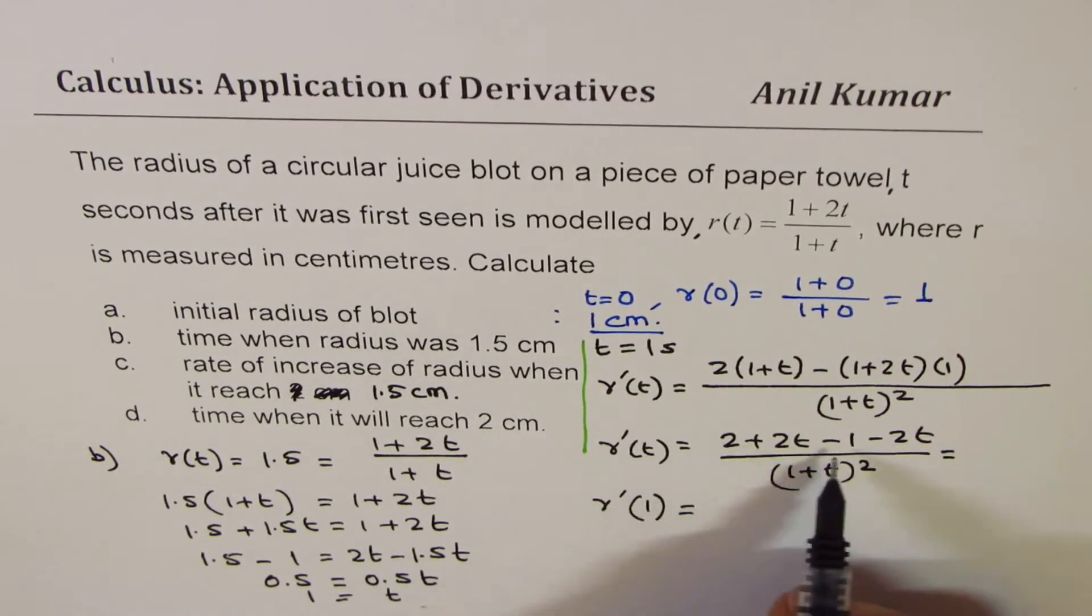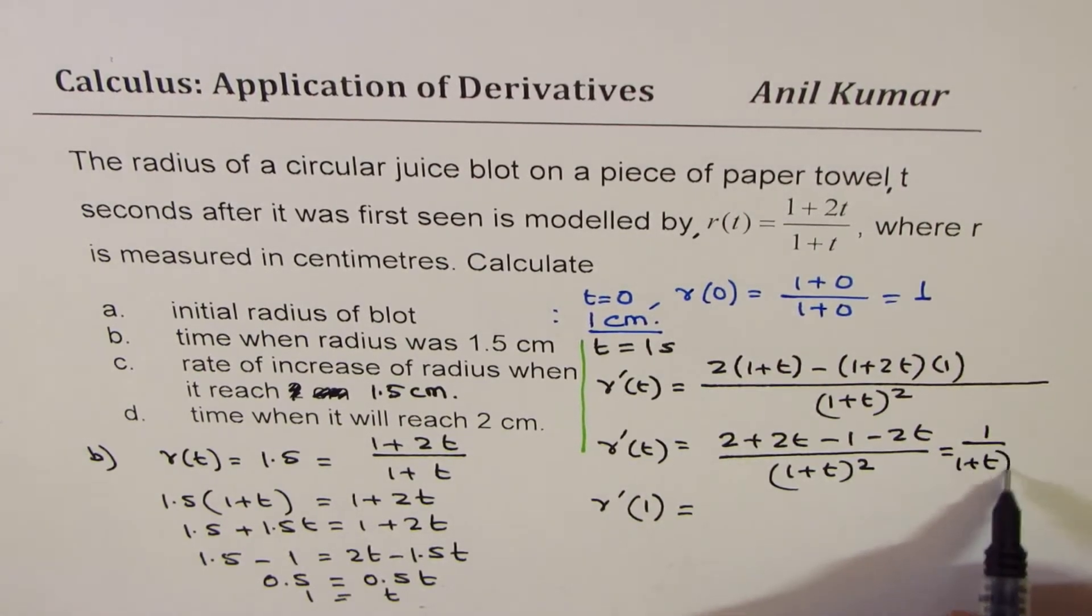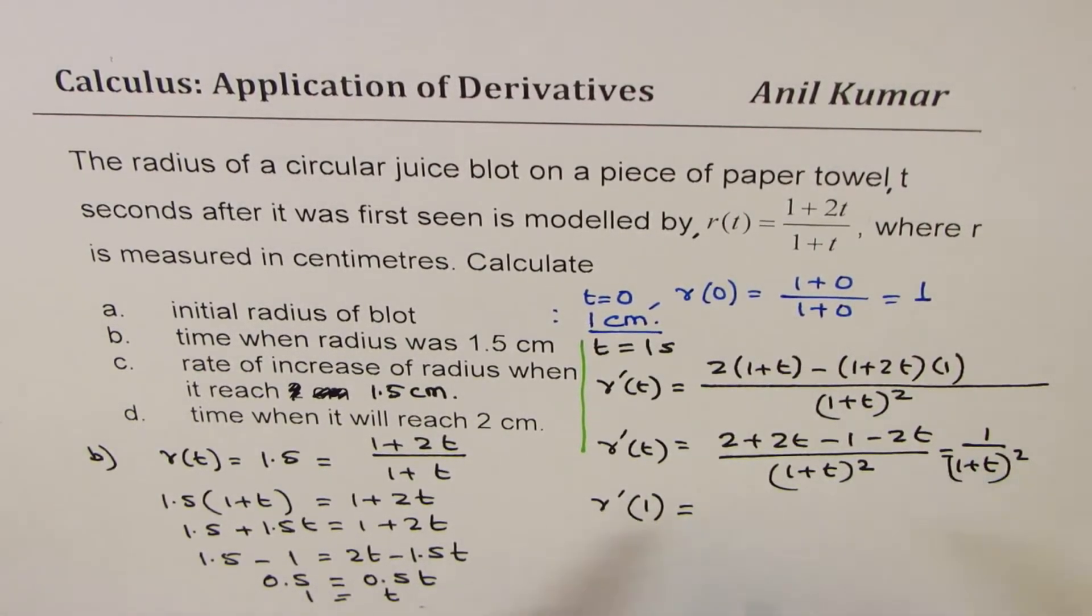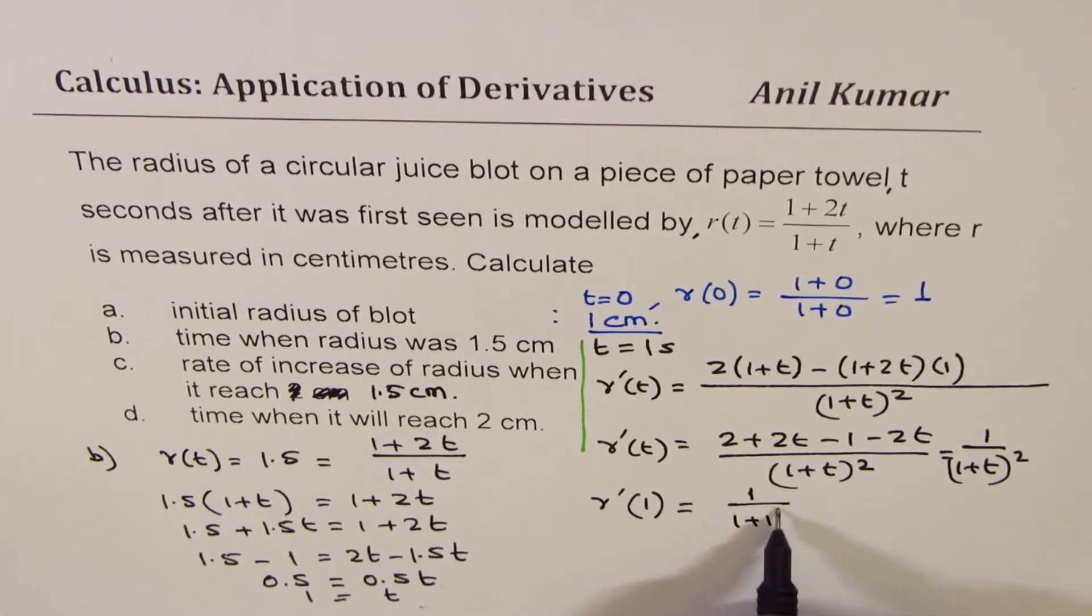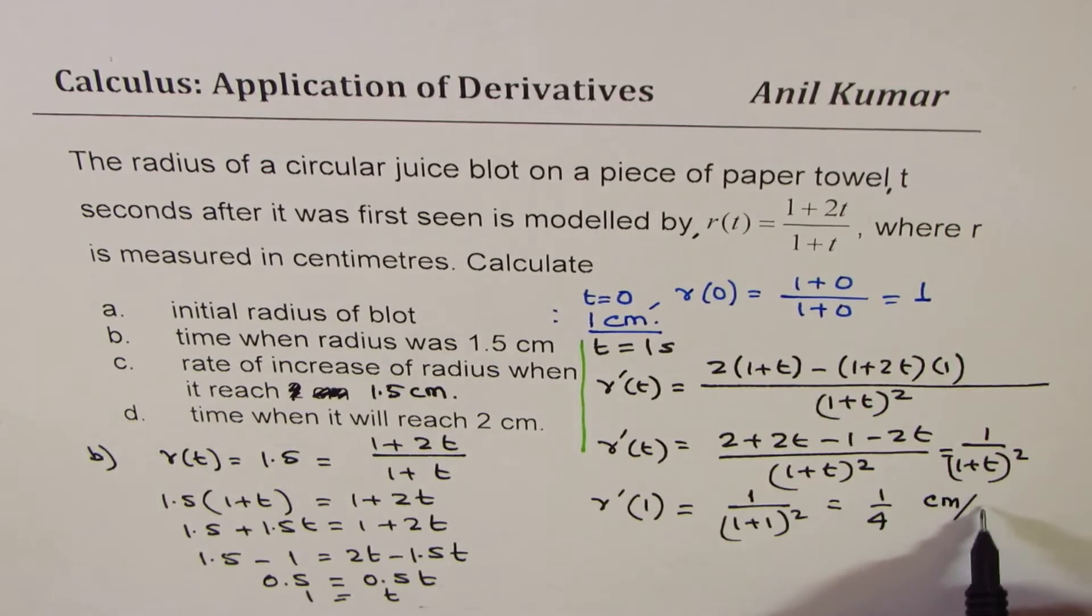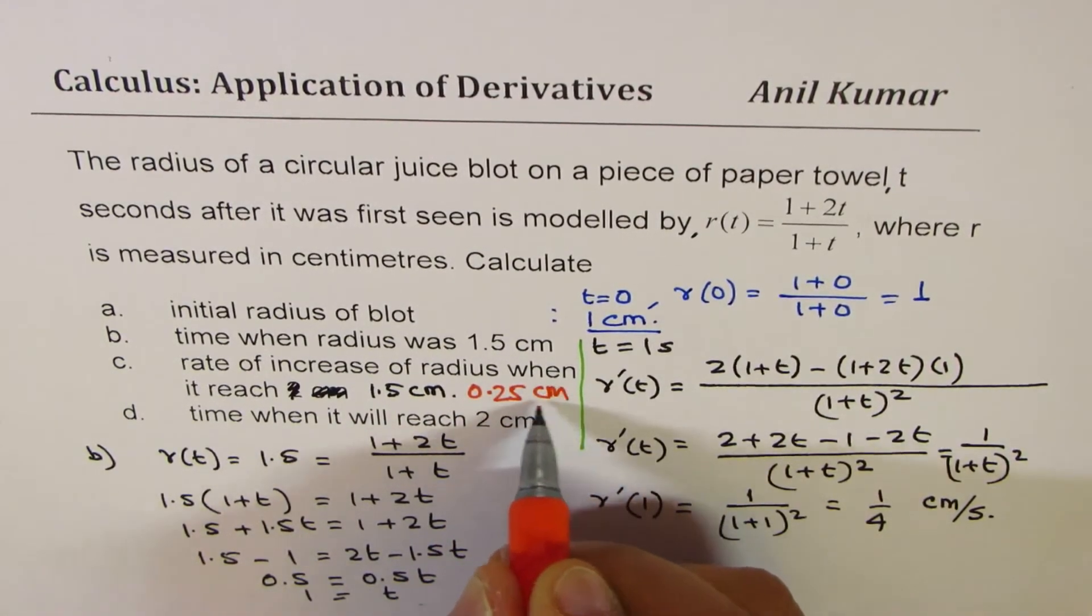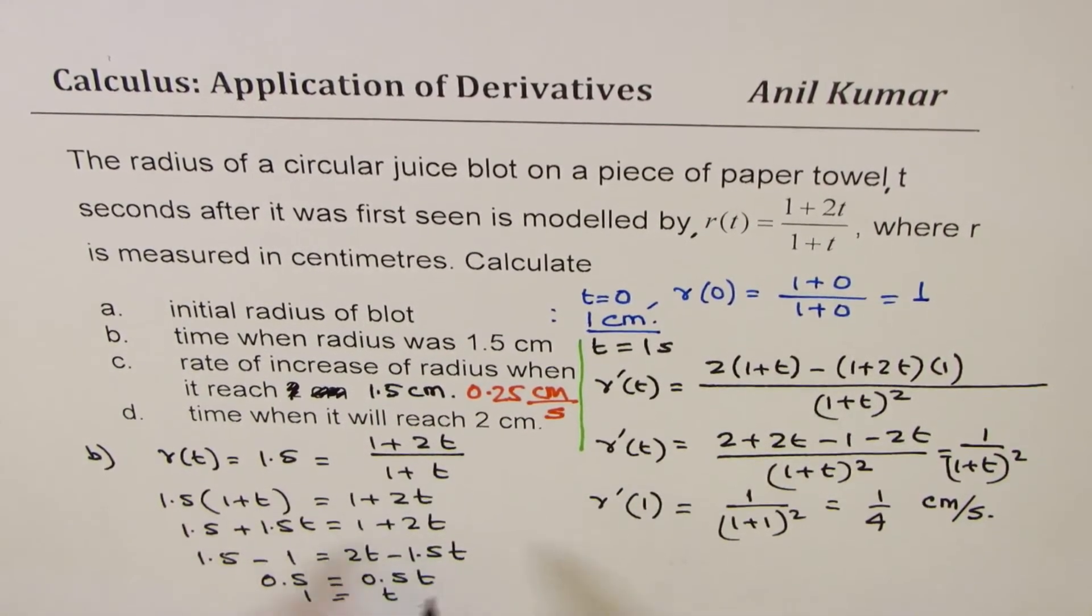If I substitute t = 1, we could actually simplify this. Let's rewrite - we only get 1/(1 + t)², which is 1/2² or 1/4. The units are centimeters per second. So the answer is 0.25 centimeters per second.